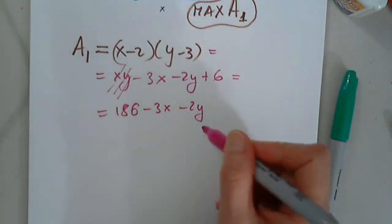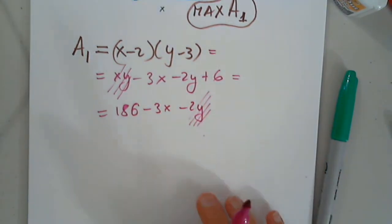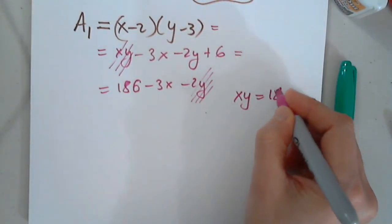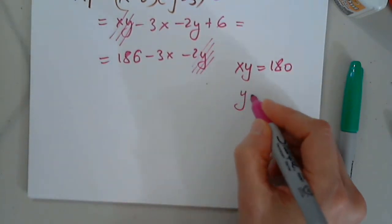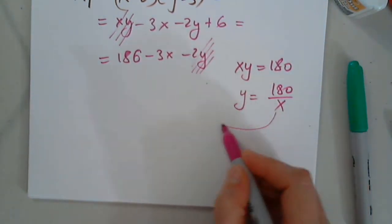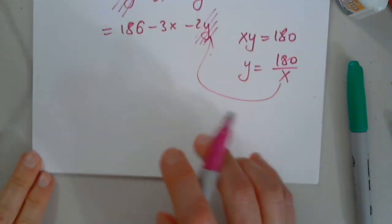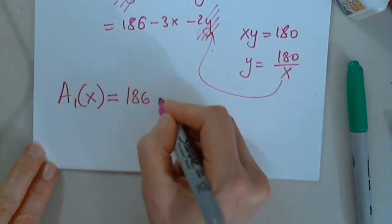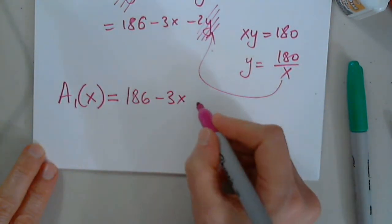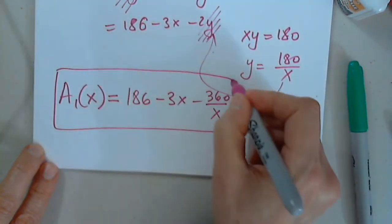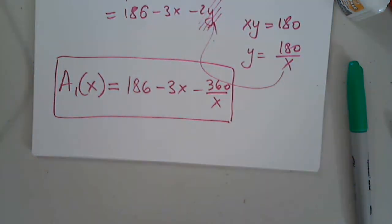And of course, again, I have to get rid of one of the two variables. Not a problem because I know that XY equals 180. So then Y will be, can anyone tell us why? Is it 180 divided by X? Perfect. So I'm going to plug it in. So finally, I can say that A1 is a function of X as I wanted it to be. 186 minus 3X and minus 2 times 180, which is 360 over X. Once I establish this, from this moment on is a piece of cake.